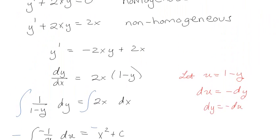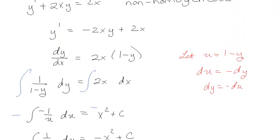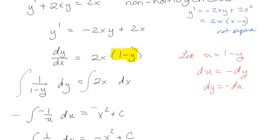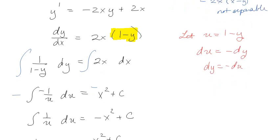Really, that only happened because we got lucky — lucky in that it was still separable because we were able to get the x's and y's apart. If the problem had been y prime equals negative 2xy plus 2x squared, when I factor out 2x I still have x minus y, which means it's not separable. So I'm totally stuck and can't solve it anymore.